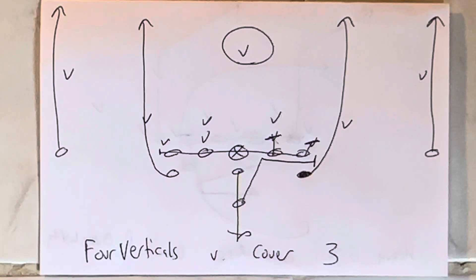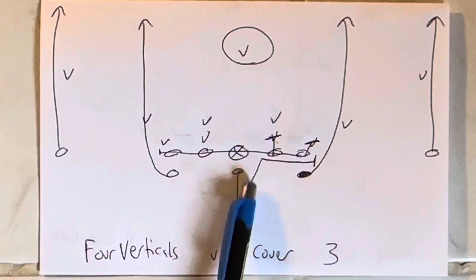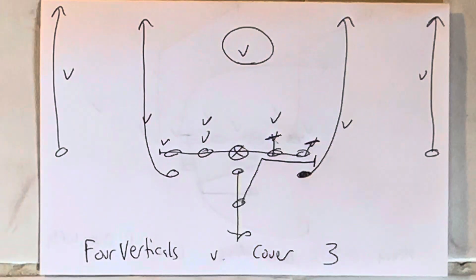So the point of it is, this is a way to beat cover three, but this guy is going to be the key because he's got to pick up the mic. If the mic blitzes, he's got to get in front of the quarterback and go. So that's four verticals versus cover three.